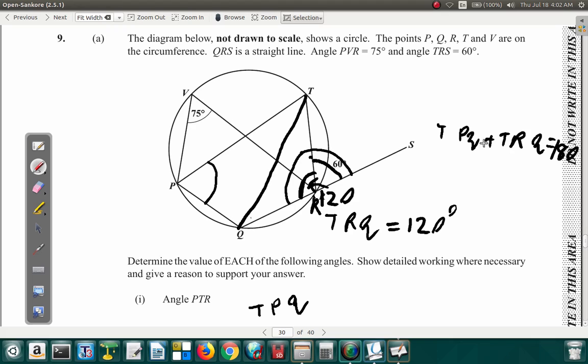Now, TRQ is 120. So TPQ plus 120 is equal to 180. So that means TPQ is 180 minus 120, and that gives 60 degrees.